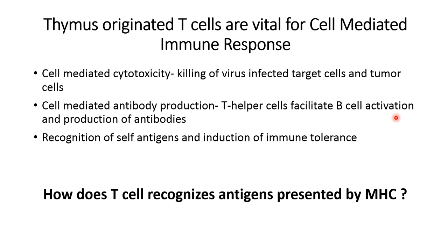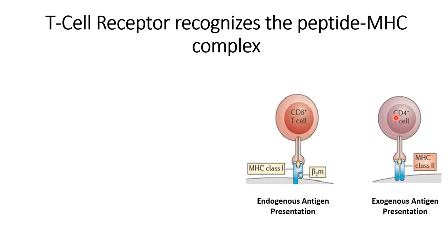The simplest answer is the T cell receptor. The T cell receptor recognizes the peptide-bound MHC complex. In the figure, you can see there are two subsets of T cells: CD8-plus T cells and CD4-plus T cells. CD8-plus T cells recognize the antigen presented by antigen-presenting cells via MHC class I molecules, whereas CD4-plus T cells recognize the antigen presented by antigen-presenting cells via MHC class II molecules. MHC class I molecules present endogenous antigens, whereas MHC class II molecules present exogenous antigens.